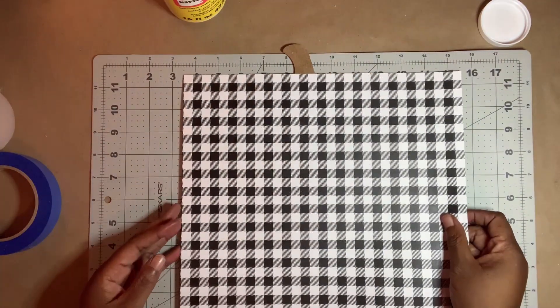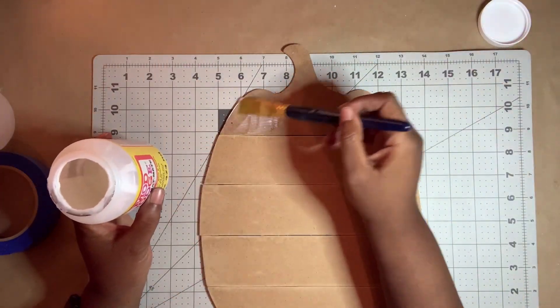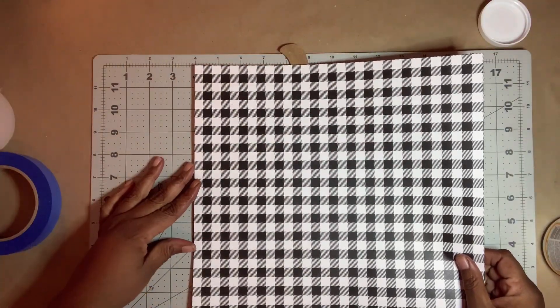To add this buffalo plaid scrapbook paper, I apply an even coat of Mod Podge over the pumpkin. I place the paper down and smooth out any air bubbles.